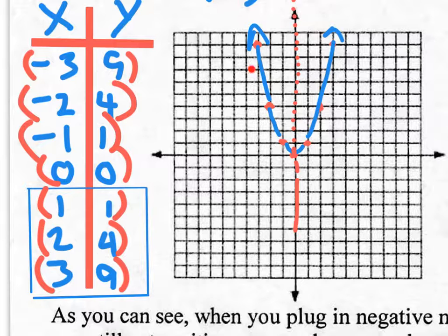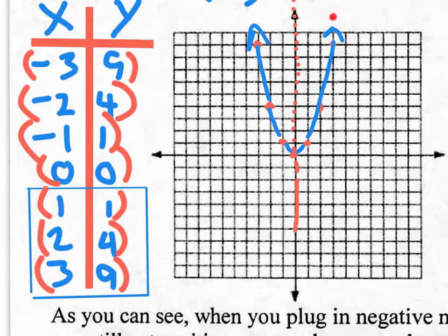This is the minimum point because it's the lowest point. When we say highest or lowest, we're really talking about the Y values. So if I asked you what is the minimum value of this parabola, you could give me the vertex — which is (0, 0) — or you could simply say the minimum value is Y equals 0, because that's your lowest Y value.